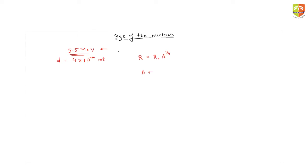Here A is the atomic mass number and R₀ is given as 1.2 × 10⁻¹⁵ meters. R₀ is the radius of the nucleus whose atomic mass is 1, so R₀ is the radius of the nucleus of the hydrogen atom. You can see that the radius of the nucleus is of the order of 10⁻¹⁵ meters, whereas the radius of the atom is of the order of 10⁻¹² meters. So we can say that the radius of the nucleus is 1000 times smaller than the size of the atom.